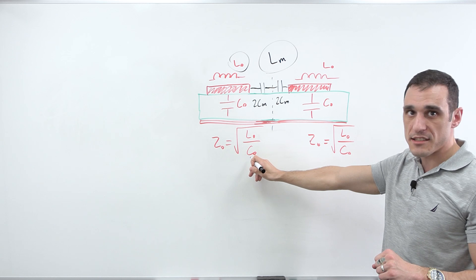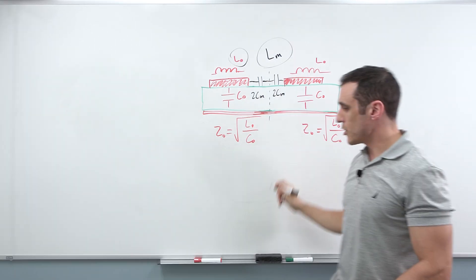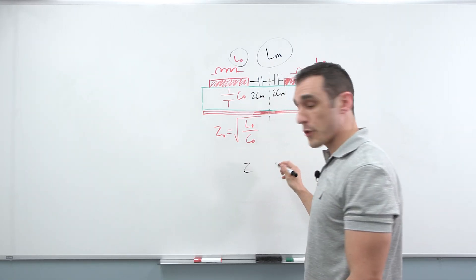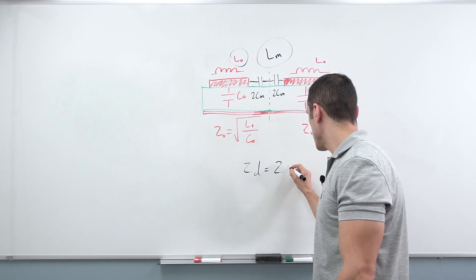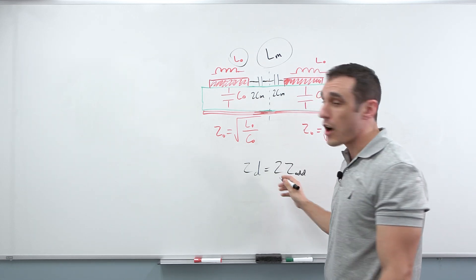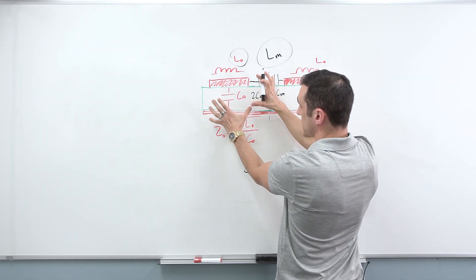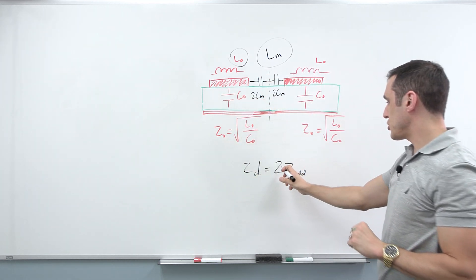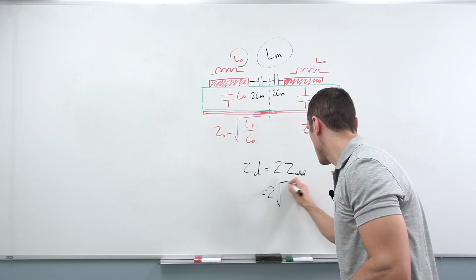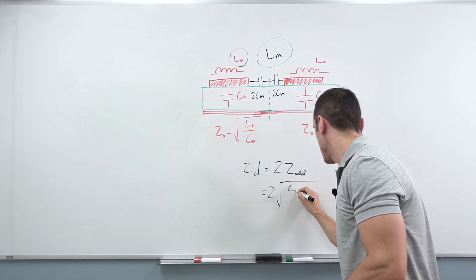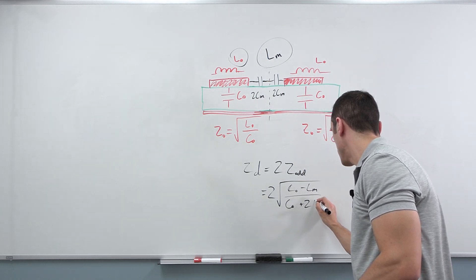Now in the denominator, previously we just had C sub zero, but in the denominator, what we're actually going to have is the sum of C sub zero and our C sub M. So if I write out my differential impedance, first what I need to do is I need to actually write out another relation. The differential impedance is equal to two times something called the odd mode impedance. And so the odd mode impedance is going to be this section of the trace. So we have two times Z sub odd, and I'm just going to write in the result.